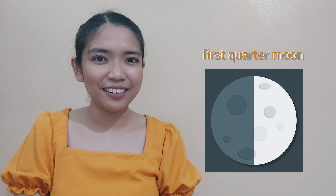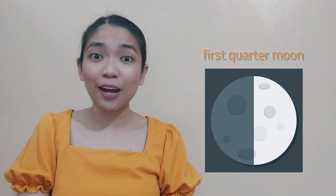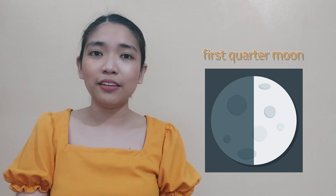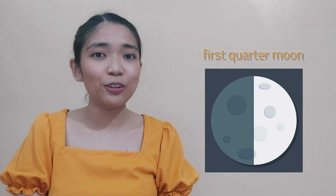When the moon has revolved to a 90-degree angle from the earth and sun on about day 7, it has reached its first quarter moon. We can now see half the moon while the other half sits in invisible shadows. The next face at about day 10 is waxing gibbous moon, where we can see roughly three-quarters of the moon.